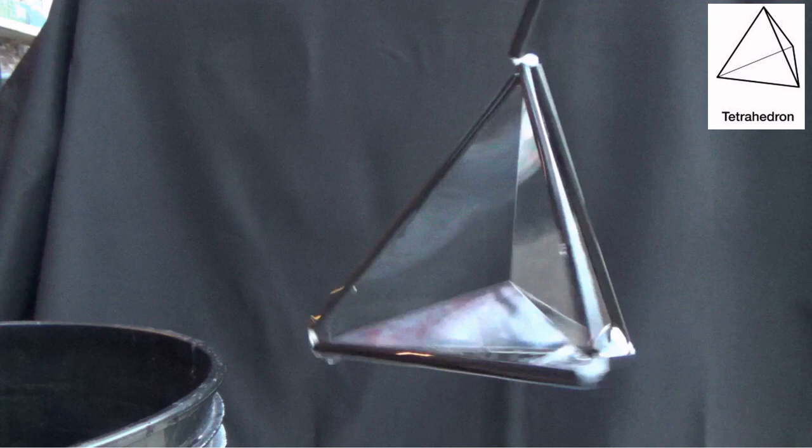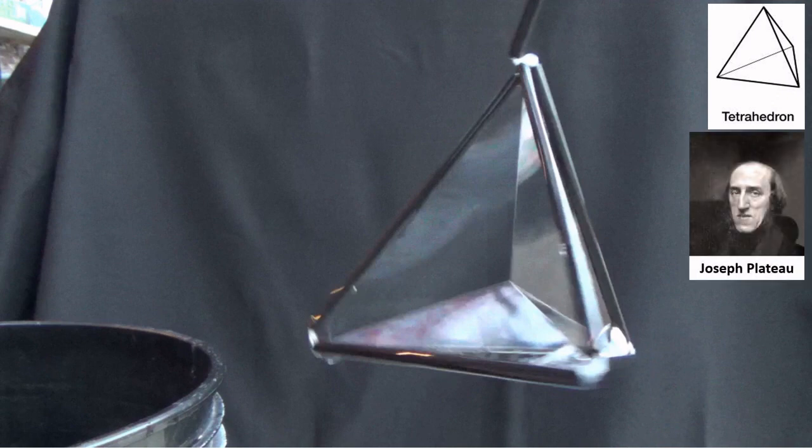That's actually got six flat films coming from each of the six edges of the tetrahedron, all meeting at a central point. That's just crazy cool and was actually observed 150 years ago by Joseph Plateau, the Belgian mathematician.